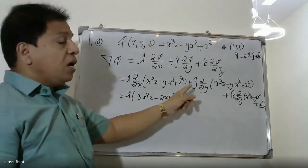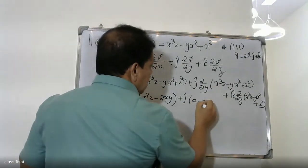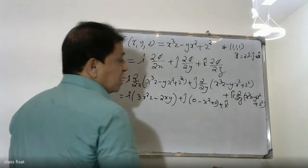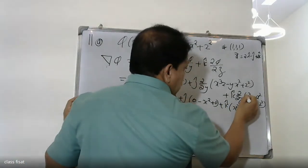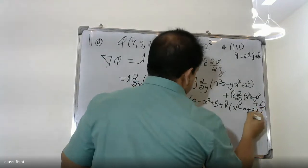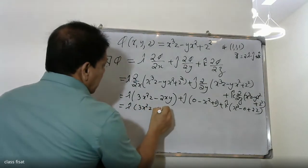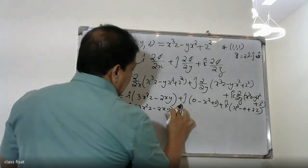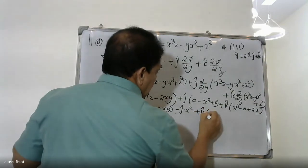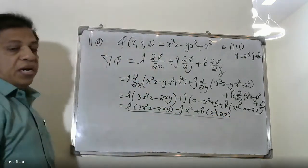Partially differentiating with respect to y: x³ becomes 0, giving minus x². Partially differentiating with respect to z: x³z gives x³, and z² gives 2z. So del φ = i(3x² - 2xy) + j(-x²) + k(x³ + 2z).